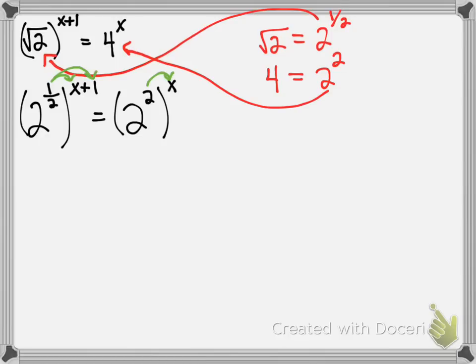So our equation now is 2 to the one-half x plus one-half equals 2 to the 2x.